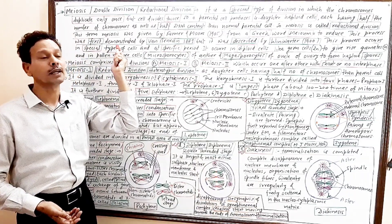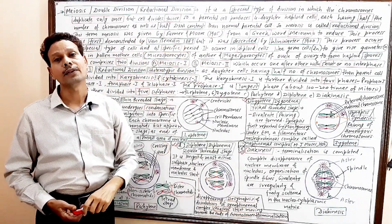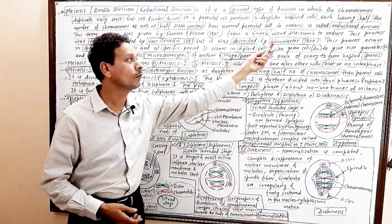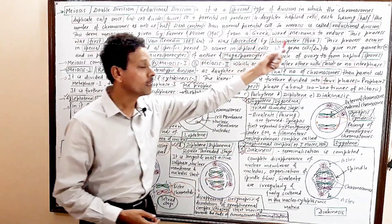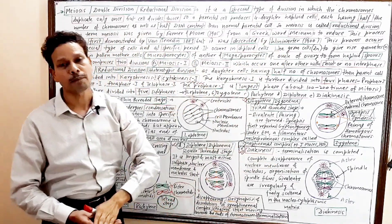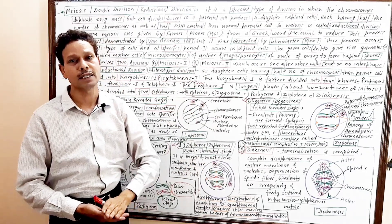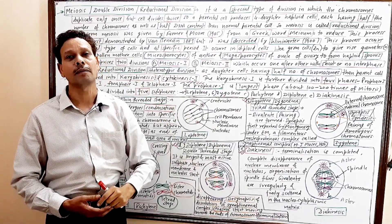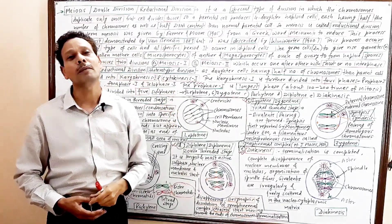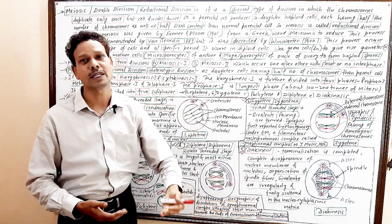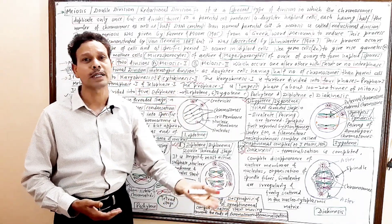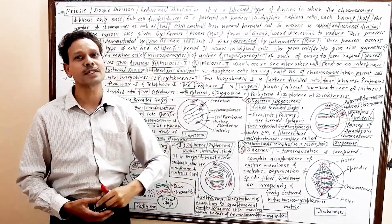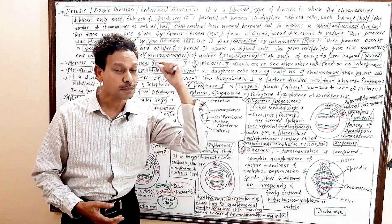This process of meiosis was first demonstrated by Born Benedin in 1883, but it was described by Winnie Walter in 1900. It is a characteristic feature of diploid cells and it occurs in specific cells at specific times — in the case of the human body, at the time of gametogenesis, spermatogenesis, and oogenesis in the germ cells.